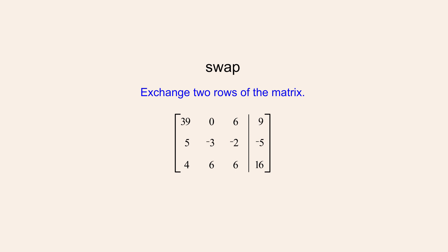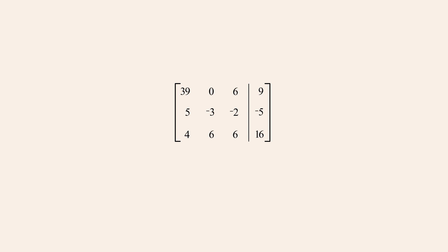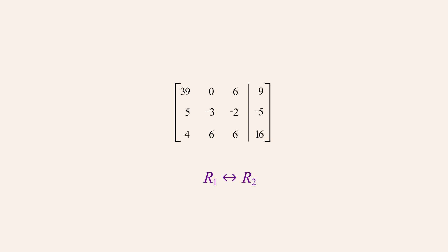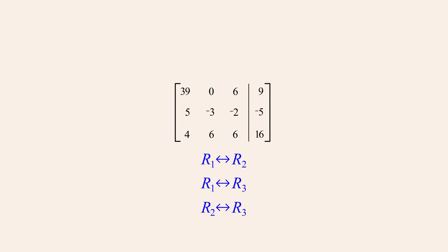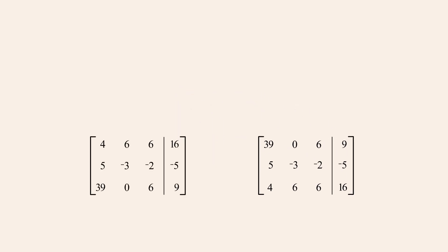Many textbooks use a method of notating row operations which we will use as well. To notate that we have used the swap operation to swap row 1 and row 2, we write R subscript 1 and R subscript 2 separated by a double-headed arrow. Swapping rows changes the form but not the solutions of the system, since the order in which the equations of a system are listed has no effect on the system's solutions, producing an equivalent system of equations.